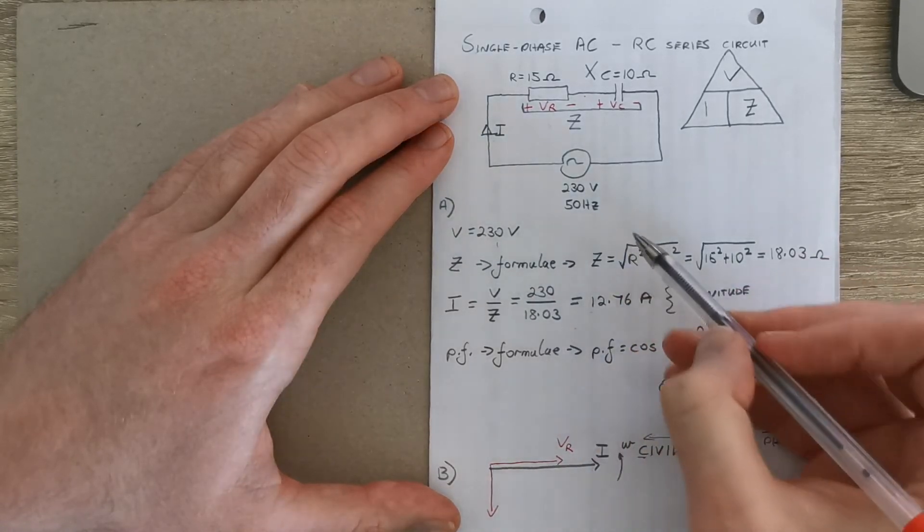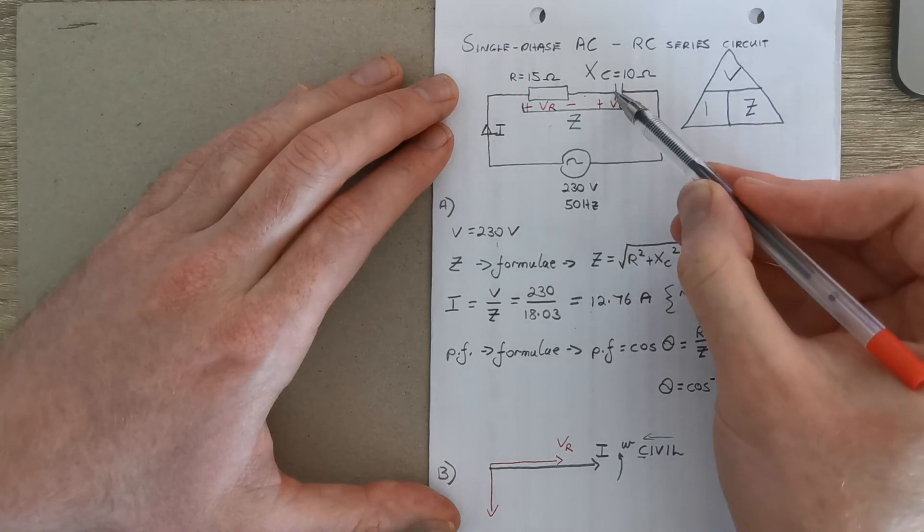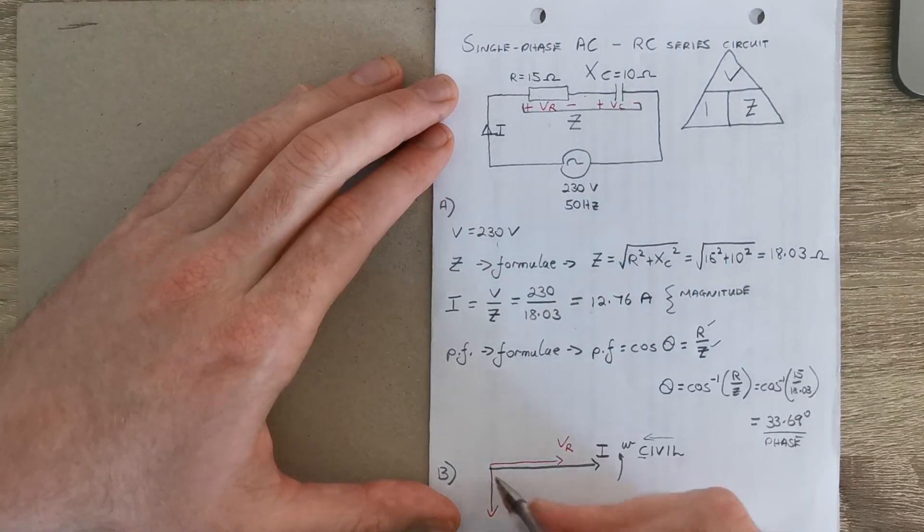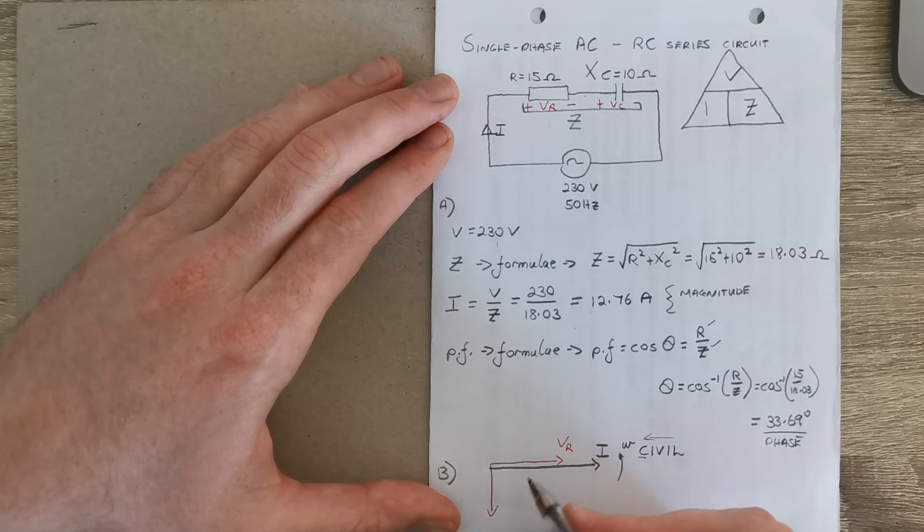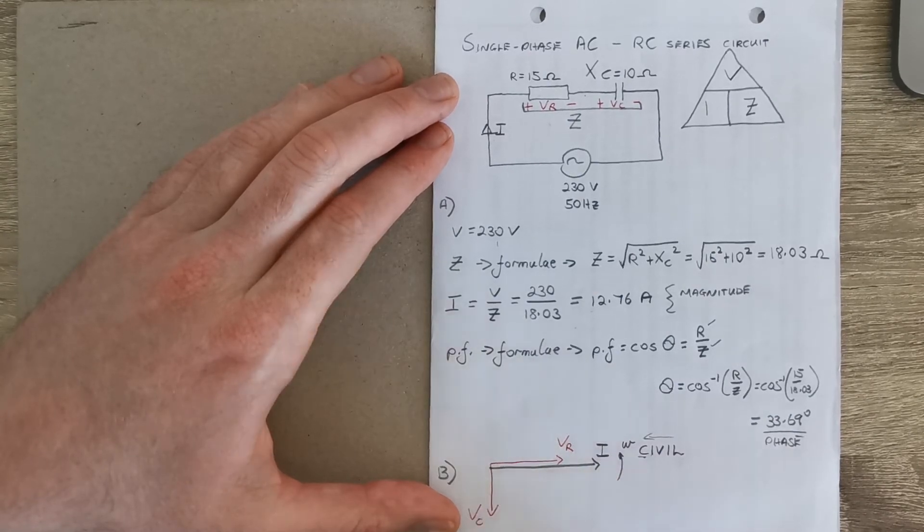And it's going to be slightly smaller than the voltage in the resistor. So I'm drawing this one slightly shorter than VR, and this will be VC, the capacitor voltage.